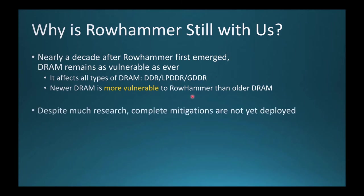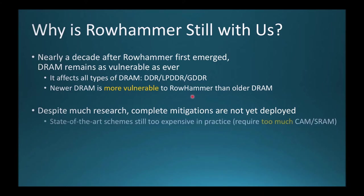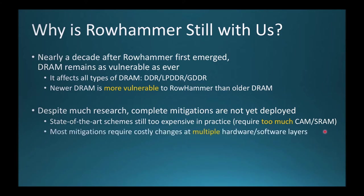The research community has proposed many mitigation schemes, but unfortunately complete mitigation schemes that fix all forms of Rowhammer are not yet deployed in practice. We believe there are two reasons for this. First, these schemes still come with cost and performance downsides, requiring a significant amount of additional memory like CAM and SRAM, which is considered quite expensive by hardware vendors. Second, most require changes at multiple hardware or software layers, such as changes to both the DRAM devices and the memory controller, or to the memory controller and the RCD chip. Costly changes across multiple layers are difficult to implement because they require the cooperation and agreement of multiple hardware and software vendors.